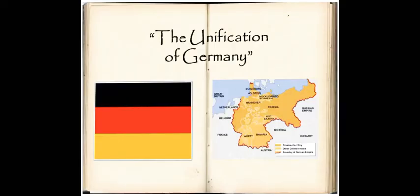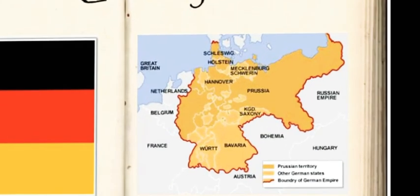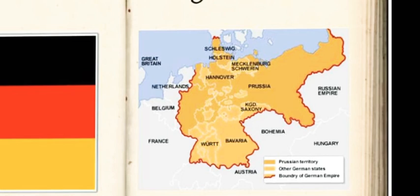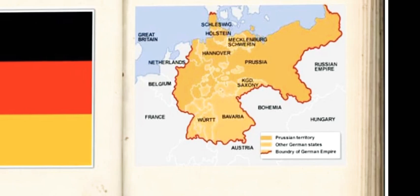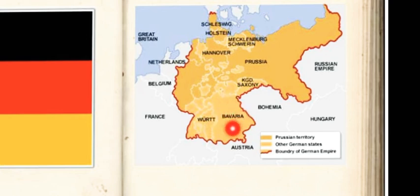Before I narrate the story, you must know the flag of Germany and the location of Germany. Are you seeing the tricolor flag of Germany — at top, black, red and golden color. On the right hand side, this is the map of Germany. Dark red color represents the boundary of the German empire. Dark yellow color shows the Prussian empire. Light yellow color represents the other German states. Germany at that time was a confederation of 39 states.